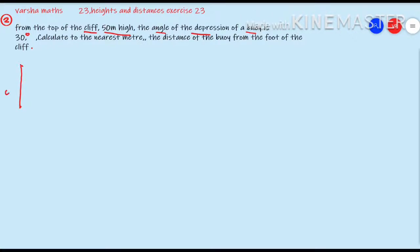First, let's understand the word 'cliff' — it is a small mountain. So draw the cliff here. The top of the cliff is at 50 meter height. Now, 'angle of depression' is a very important term. Depression means the angle is made downward from the horizontal — here the angle is 30 degrees, looking down toward the boy.